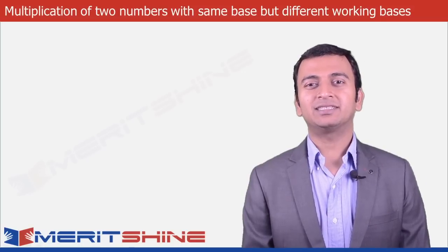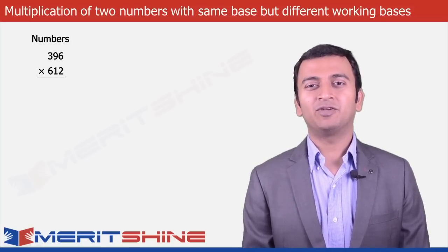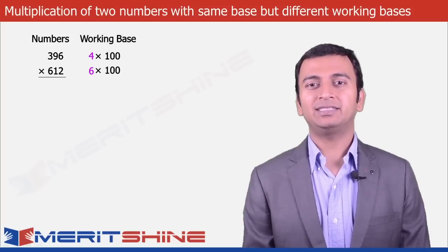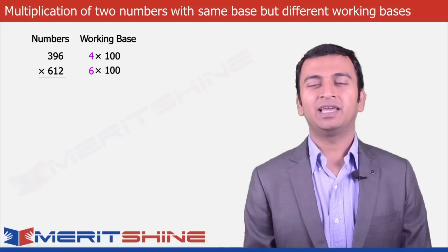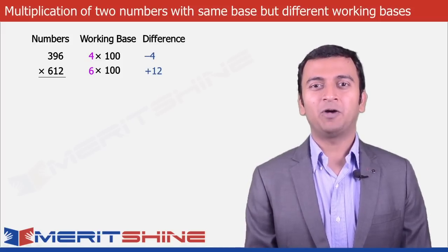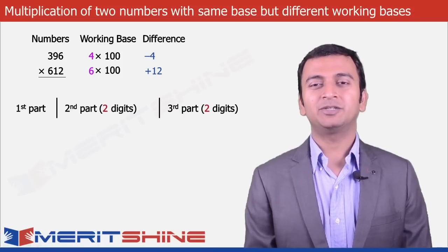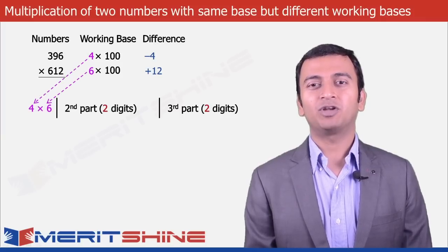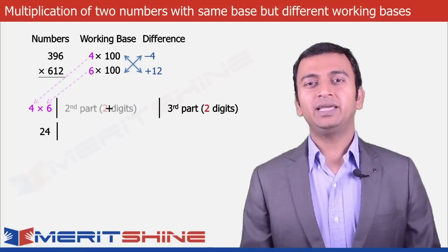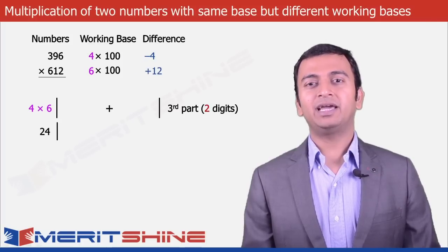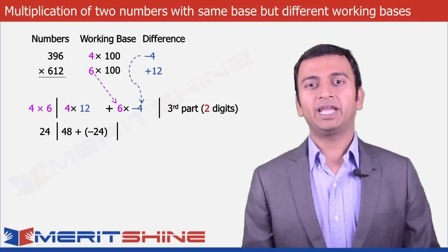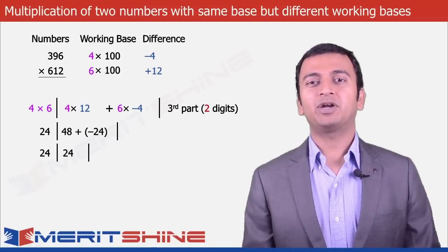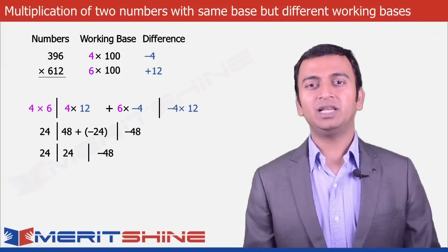Let us now take 396 x 612 as an example. Here our working bases would be 400 and 600 with multipliers 4 and 6 respectively, and our differences are minus 4 and plus 12. The first part would be the product of the multipliers, which is 4 into 6, giving 24. The second part would be 4 into plus 12 plus 6 into minus 4, which gives us 48 plus minus 24, giving plus 24. And the third part would be the product of the differences, which is minus 4 into plus 12, giving minus 48.